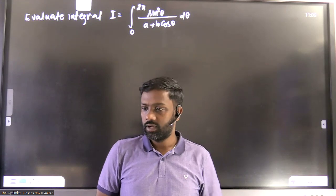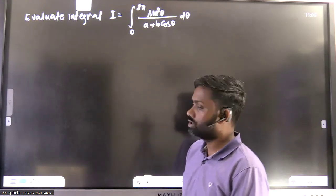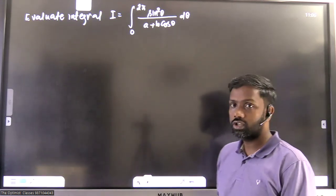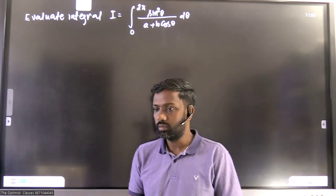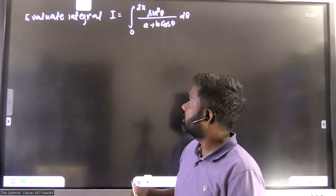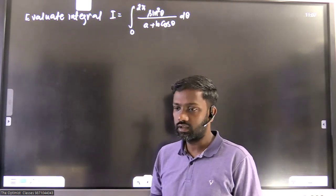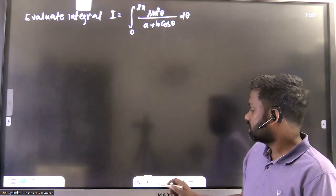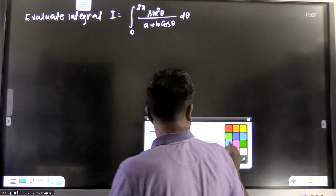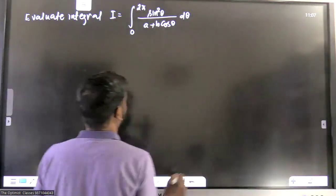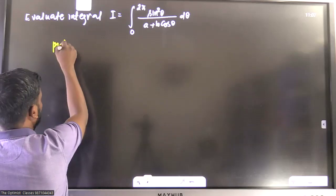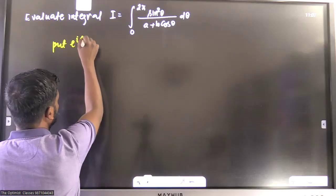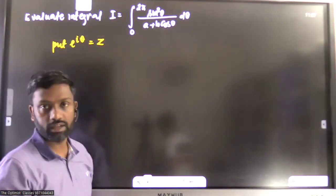Hello students. In this video I'm going to discuss the solution of this question. This is a simple question, but its solution requires a systematic approach. If you do not approach it systematically, you may not be able to get the final answer. To solve this type of question, we put e to the power iota theta equal to z, and convert this integration into a complex integration.